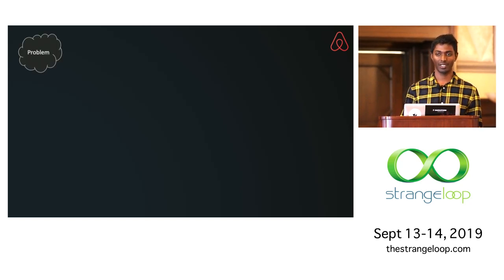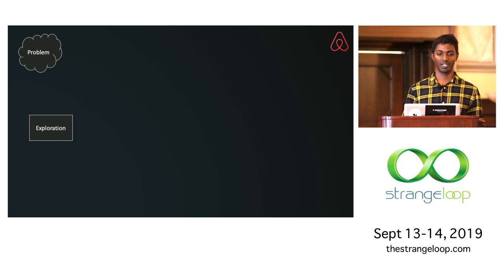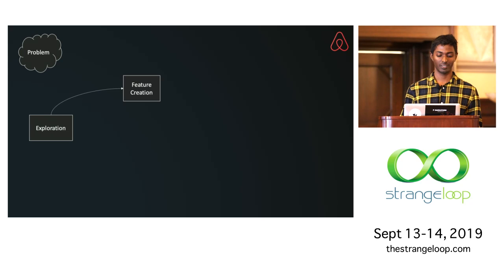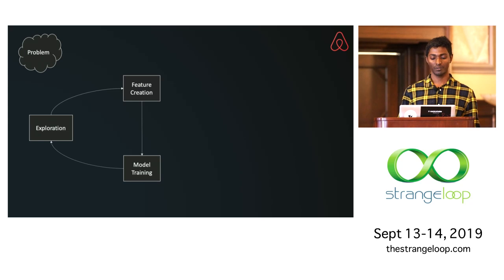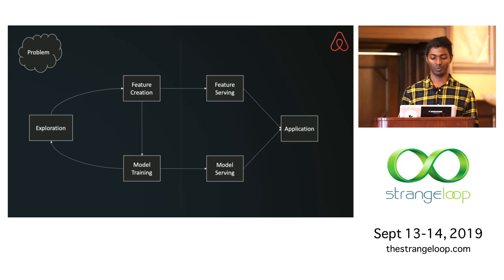Let's zoom out and look at how supervised machine learning is done today in the industry. A data scientist starts with a problem, then explores data available within the company — the databases, service logs, data lakes, and so on. They create a set of features to train a model, keep doing this in a loop until the model is good enough, and then try to productionize it and wire it up to an application server.